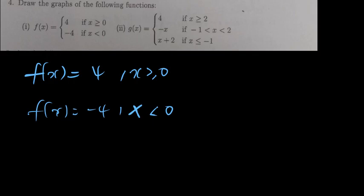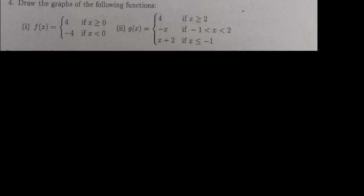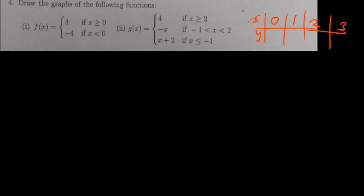For the second question, I've got three functions. Now, these functions have to be on one graph. The first thing I need to do is come up with coordinates for the first function. I'll set up x and y columns. For the first piece, x has to be greater than or equal to 0, so starting from 0, I'll go 0, 1, 2, 3. There is no x variable in the formula — it is telling me that for any value of x I plug in, the answer should be 4.